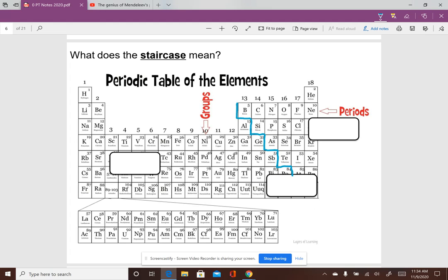Now once again, if you look at the Regents reference tables, this staircase is drawn in for you. For your Honors periodic table, this staircase is not there and the staircase tells us something really important. What it does is it splits the periodic table into two halves. So on this side of the staircase, we have metals and on this side of the staircase, we have non-metals.